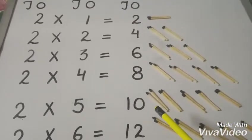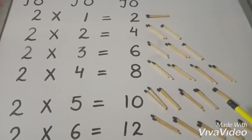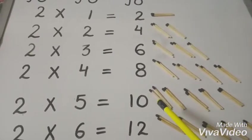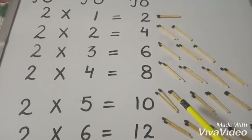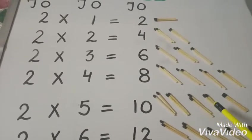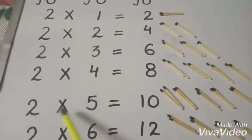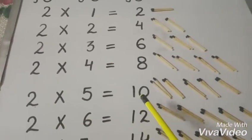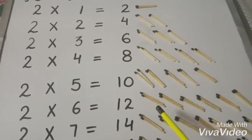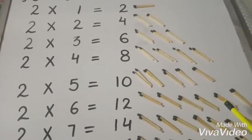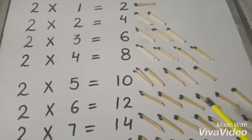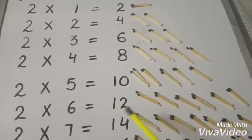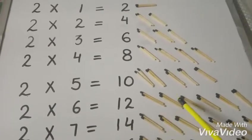When you take two sticks five times, you will get a total of ten sticks. You can count: one, two, three, four, five, six, seven, eight, nine, ten — so we can say two five's a ten. Next, two six times — when you take two sticks six times, it becomes two six's a twelve.